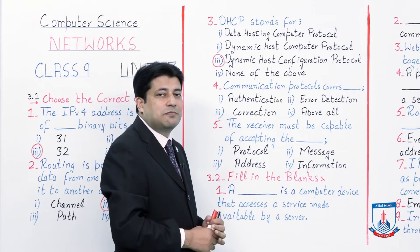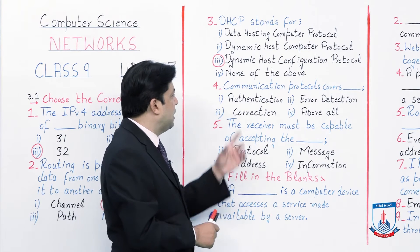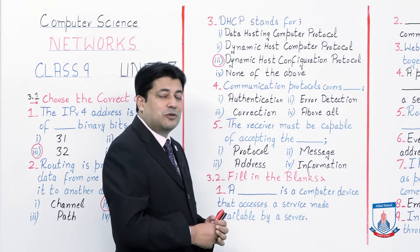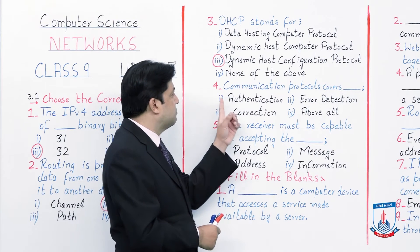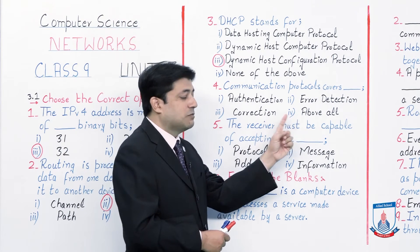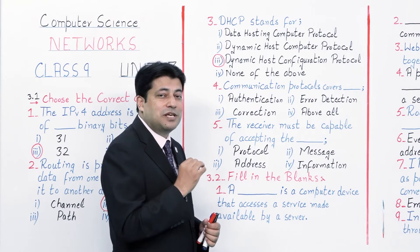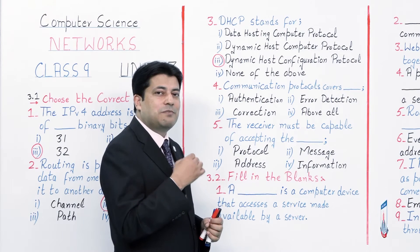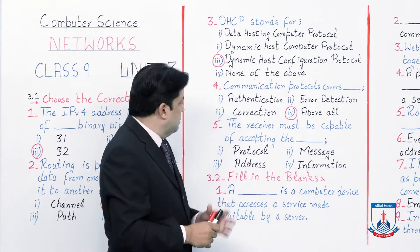I told you at the start that some questions have all options correct. If you select authentication alone and circle it, your answer is technically correct but from the examiner's point of view it would be wrong. Options 1, 2, and 3 are all correct, so the answer is option 4 — 'above all.' Always read all four options before selecting. Your answer here is number 4, above all.